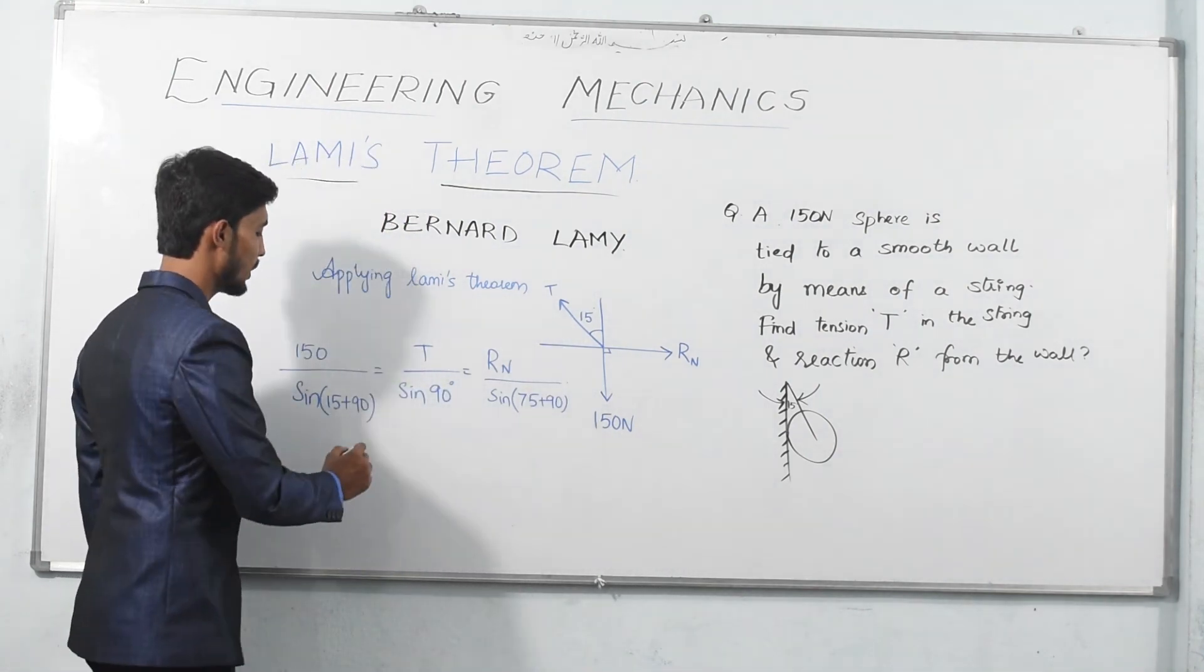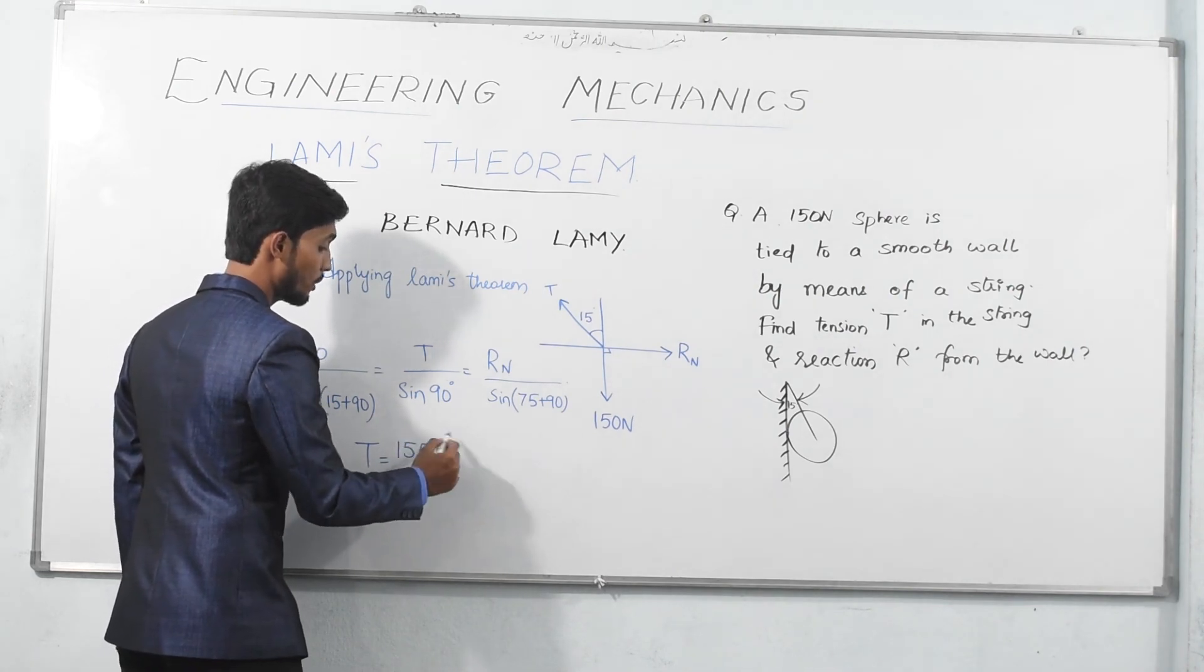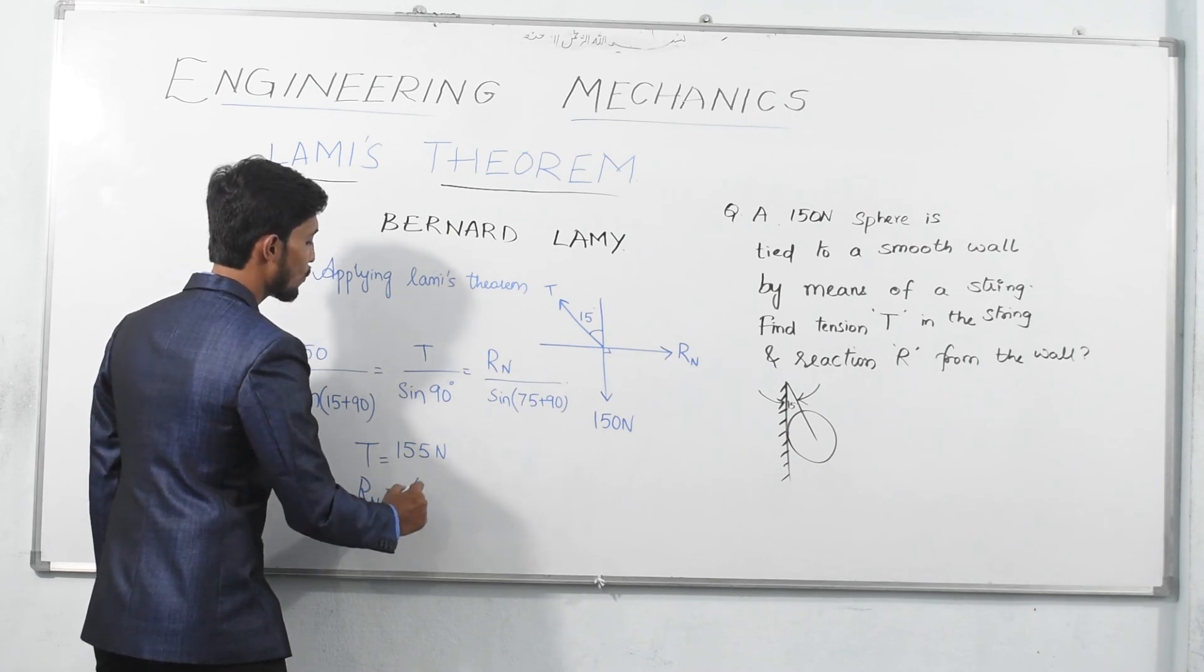As we solve the problem, we get the values as follows: we get value of tension as 155 Newton and the value of normal reaction as 40 Newton.